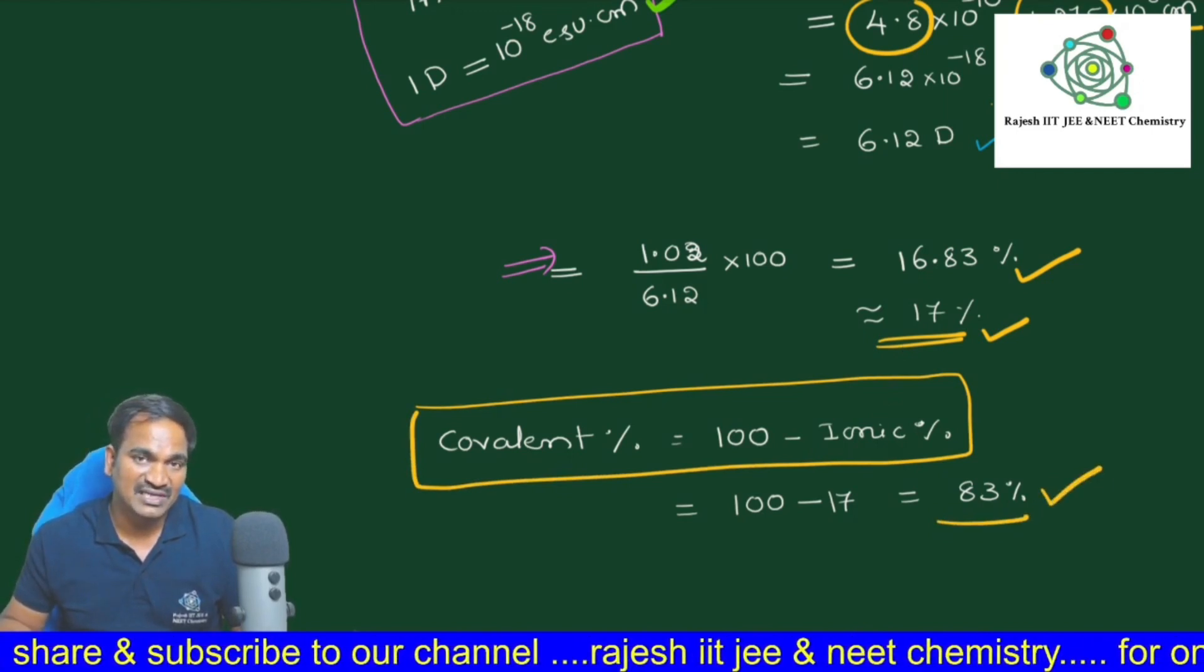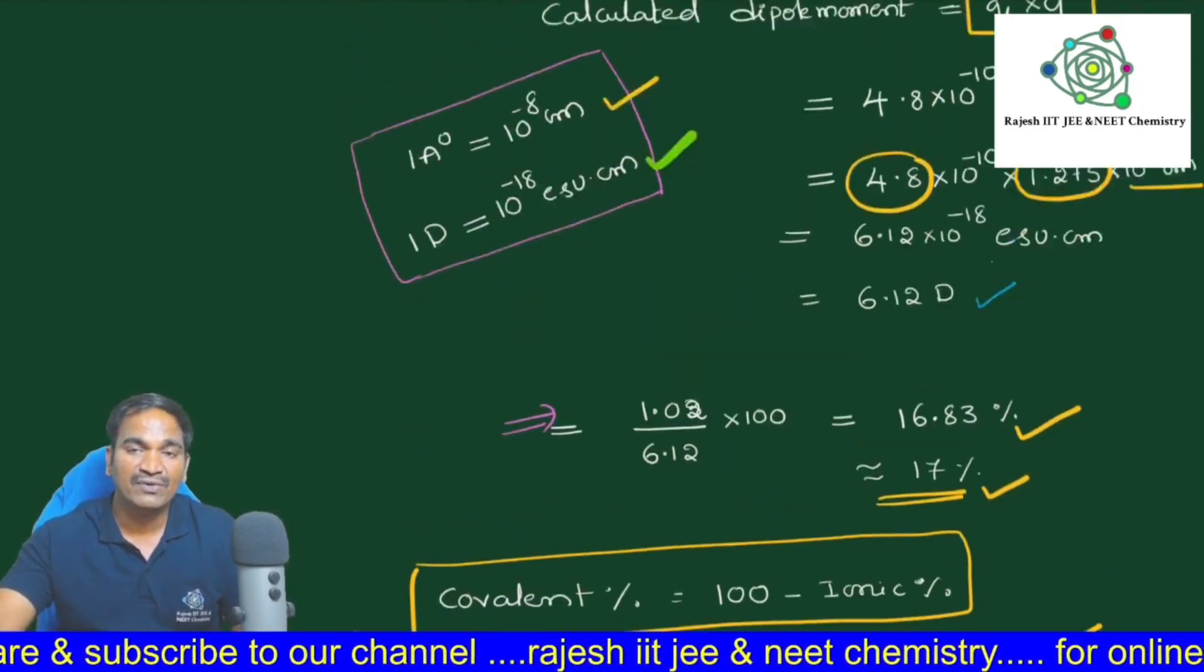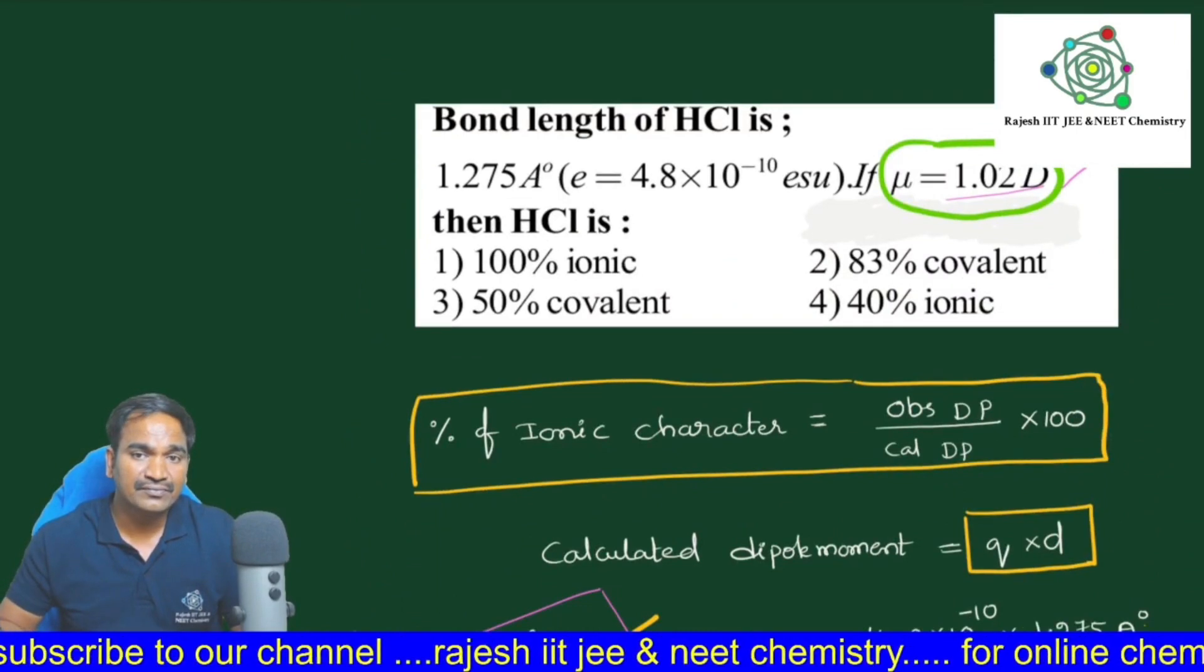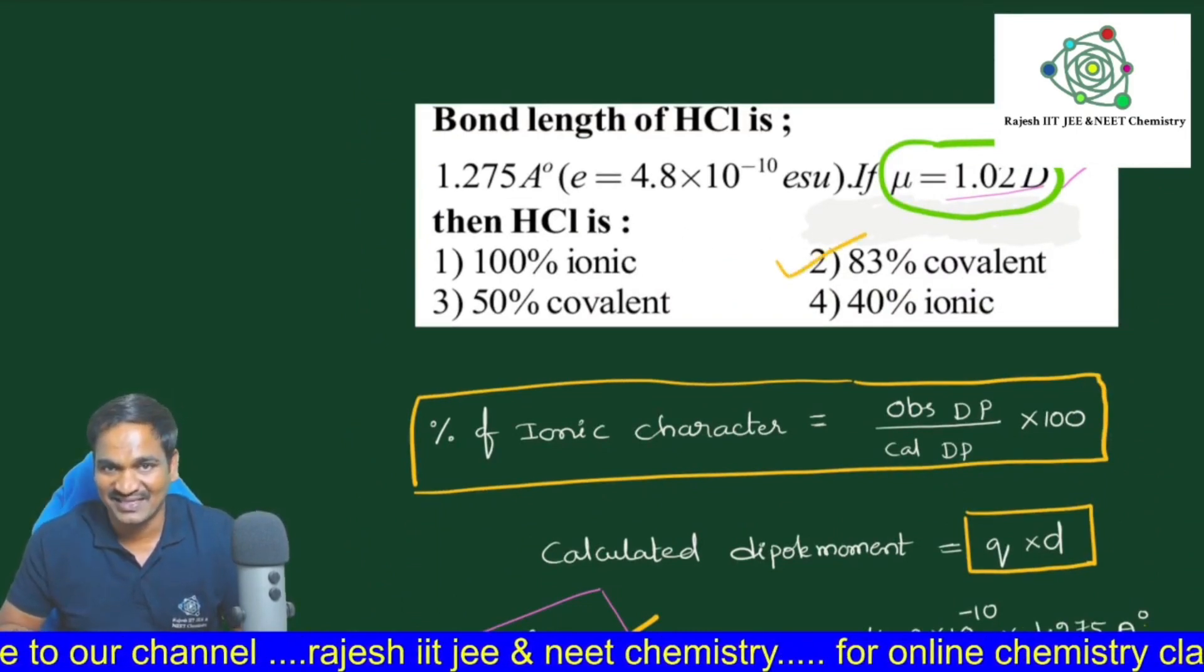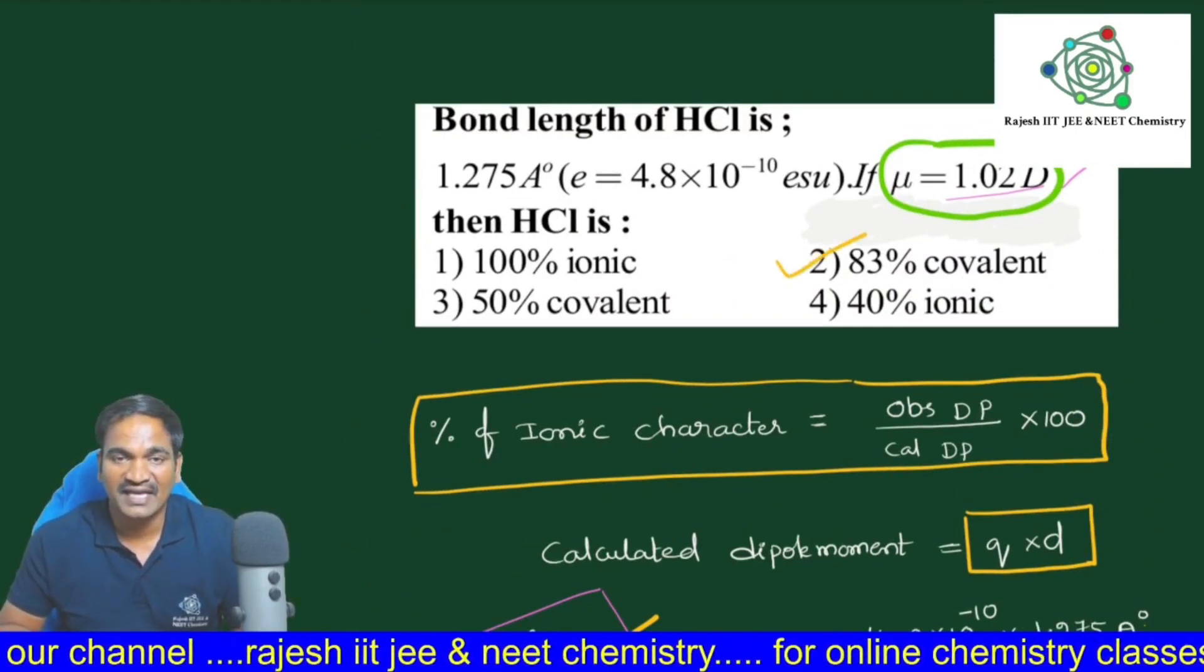Therefore, if you see in the HCl, what is the covalent character percentage? 83 percentage. Have you got it? Thanks for watching, bye bye.